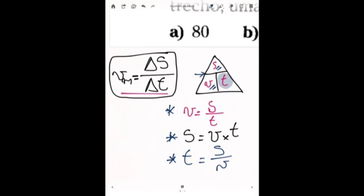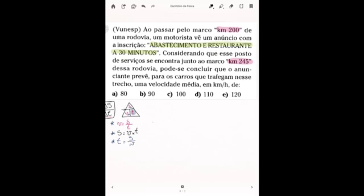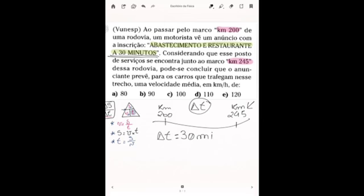Então, para resolver a nossa questão aqui, mas são os dados que eu tenho. Eu tenho que em uma trajetória, o veículo se encontra no marco identificado pelo quilômetro 200, e tem um posto de abastecimento no quilômetro 245. E a questão diz para você que aquele veículo se encontra a 30 minutos do ponto onde está o posto de abastecimento. Ele está informando para você quem é o delta T. Então, na questão aqui, eu já tenho quem é o delta T. Delta T é igual a 30 minutos.